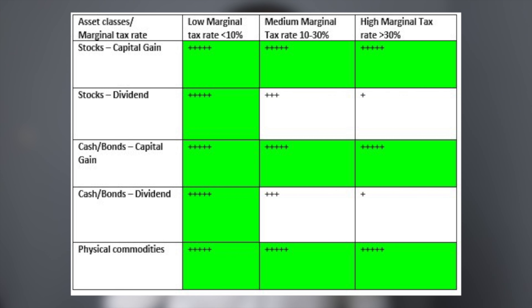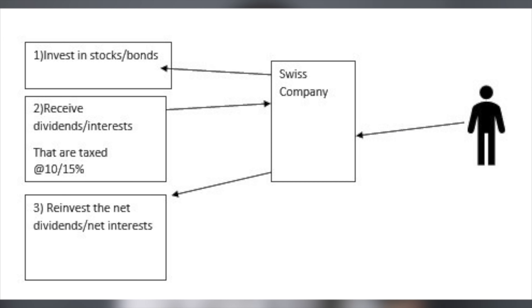One solution is to invest through your second or third pillar, since all of your capital gains, interest, and dividends are not taxable — I have made a video on the third pillar if you need more information. Another solution, for high income earners, is to create a Swiss holding company that holds all of your assets delivering high interest and high dividends. They will be taxed at a rate of 10% or 15% depending on where your company is located, and you constantly reinvest all of your income through your company. We need to find stocks that offer growth and do not pay any dividend — download my ebook in the description below to find out my personal favorite stock for Swiss residents.